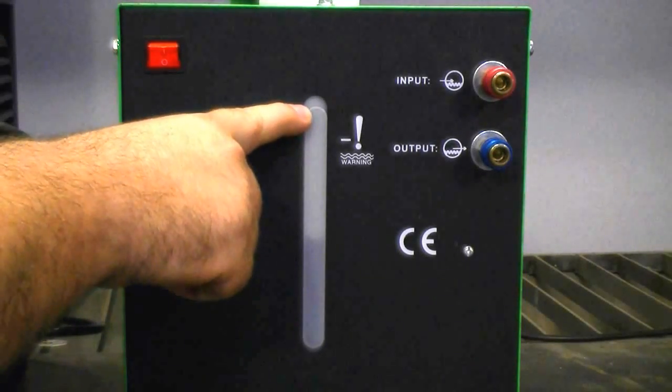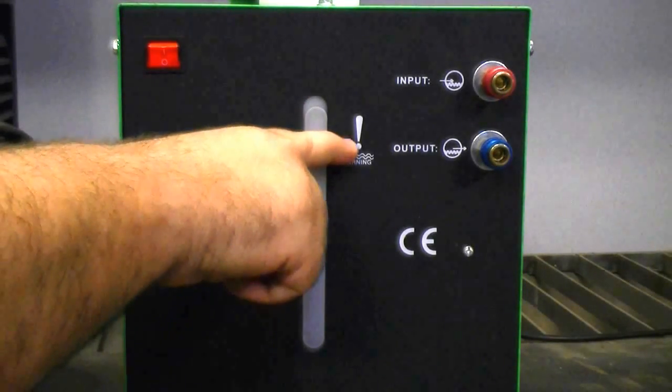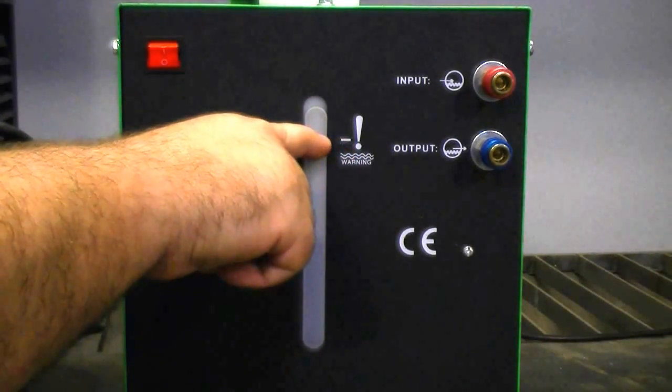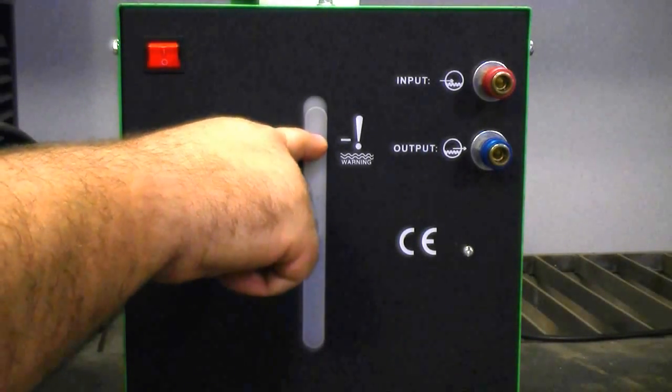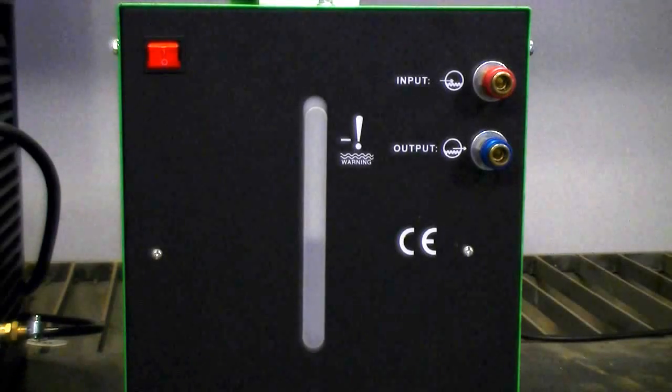Right here we have our water level indicator. You can see the maximum water mark right here. Make sure it doesn't go over that or you're going to have trouble cooling the water efficiently. If it drops below here, you're going to have the same problem.